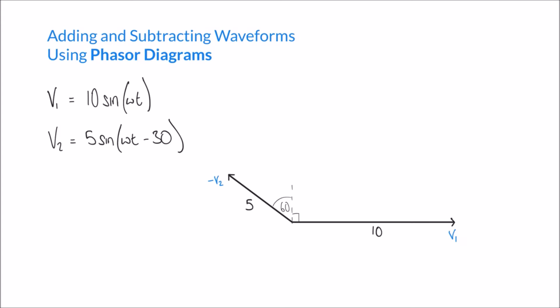Similar to when we looked at adding those two waveforms, we need to convert these two vectors to horizontal and vertical components in order to find v1 minus v2. By setting up our diagram correctly — roughly a parallelogram arrangement — we can find that v1 minus v2 is going to point in a certain direction. But we don't know the length of that vector or the angle it's at from the horizontal, so we need to use vertical and horizontal components again to figure out the resultant.